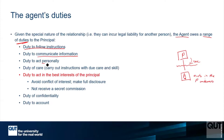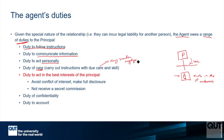You have a duty to act personally — that means you can't go and hire someone else to do your job. You've agreed to be the agent, they've appointed you, therefore you have to do it. You also have a duty to act with care — due care and skill — which is very similar to what's required under negligence. You've got to take care if you're going to take on this role.